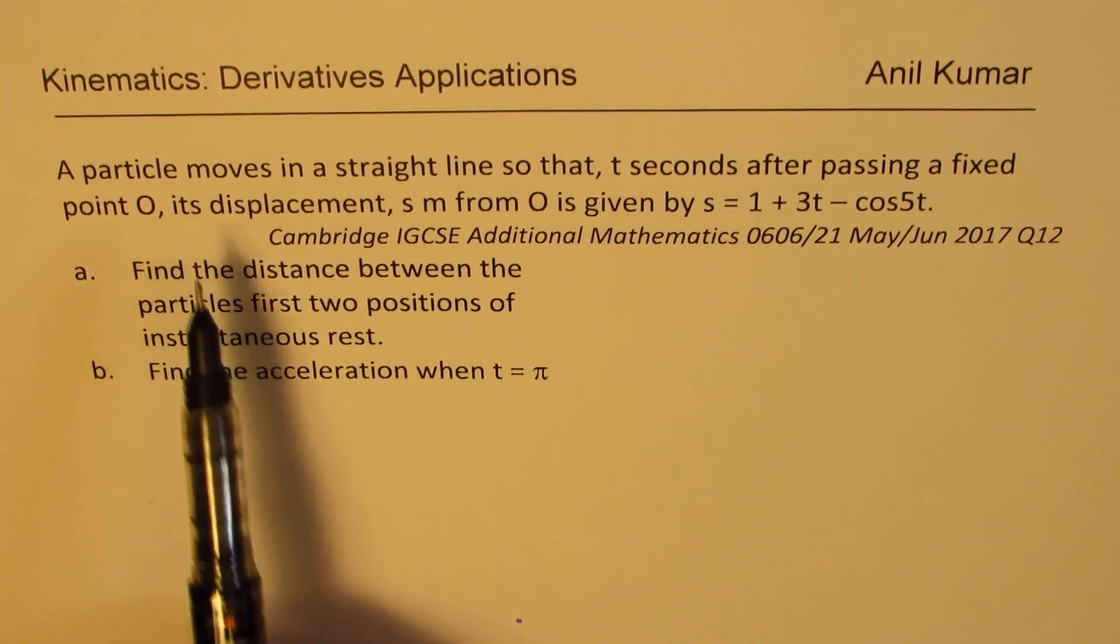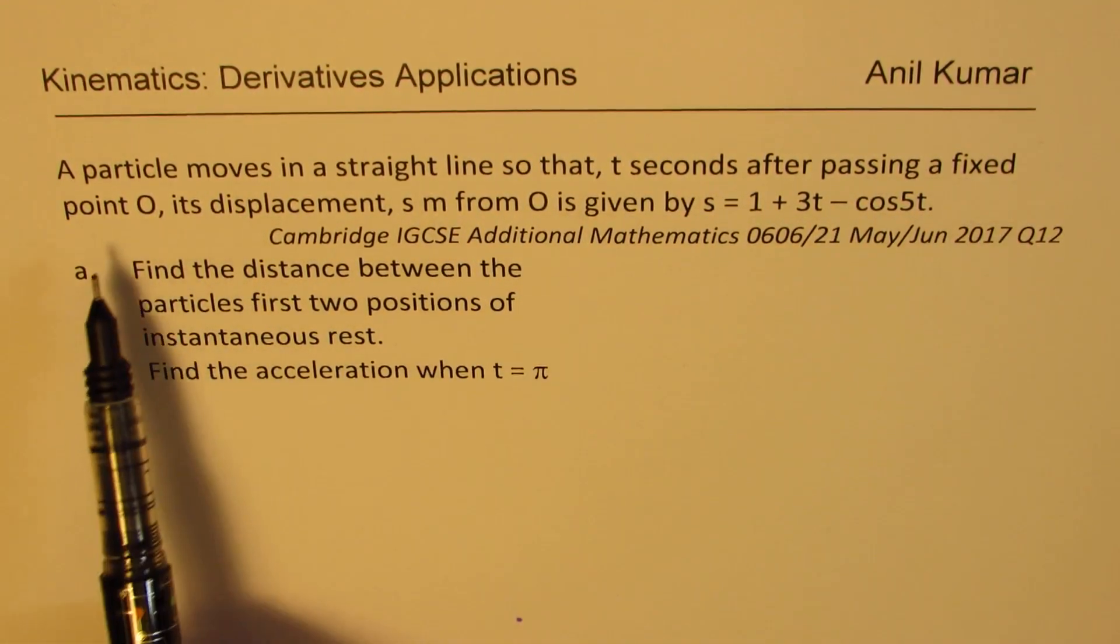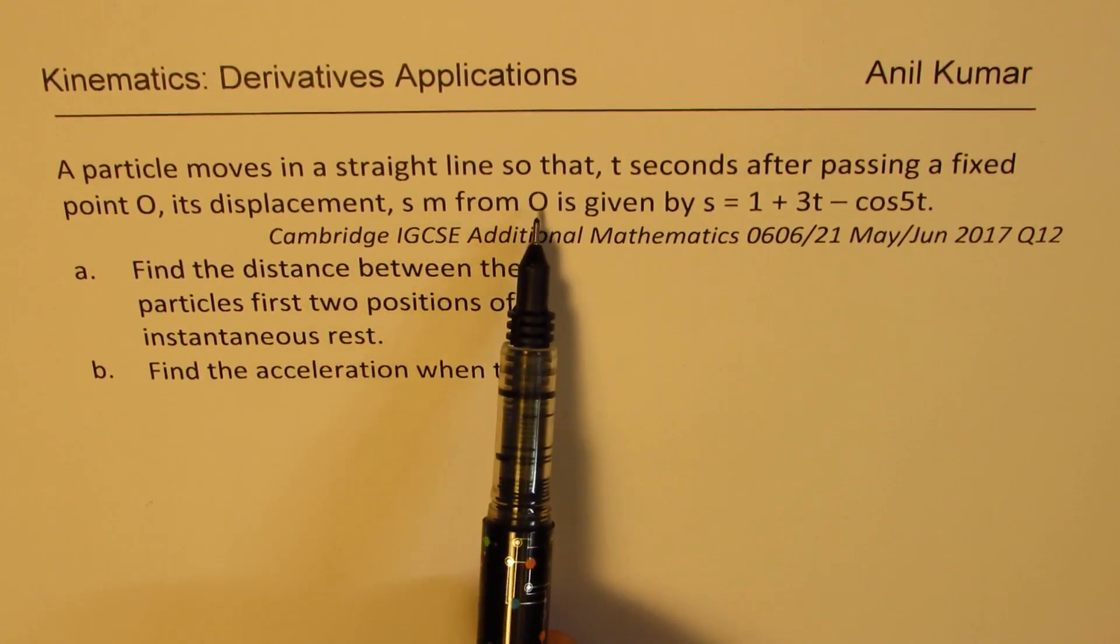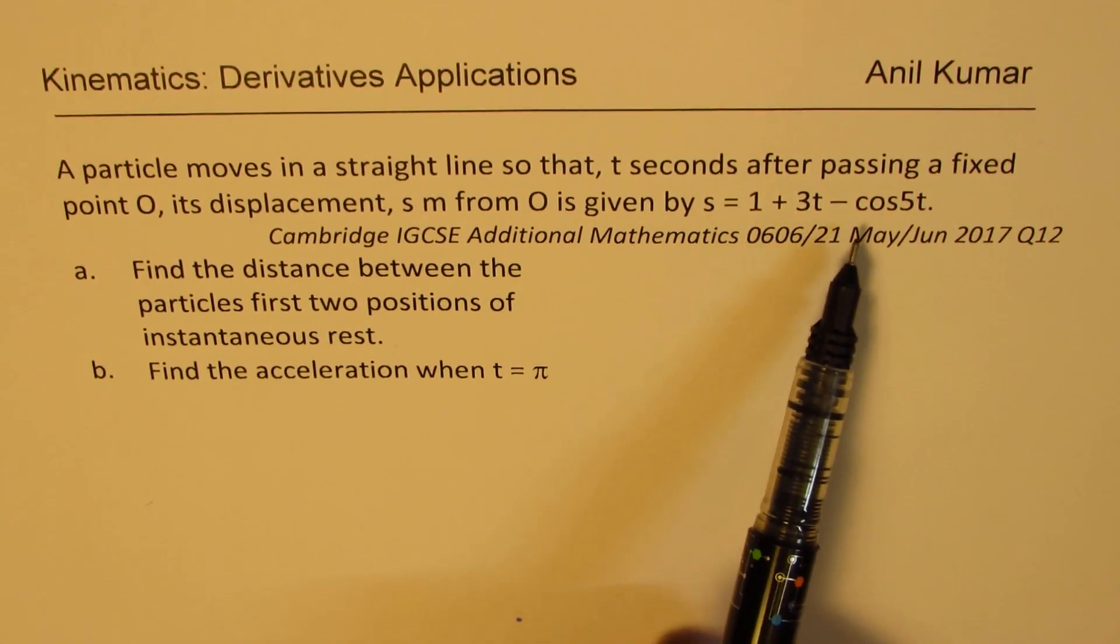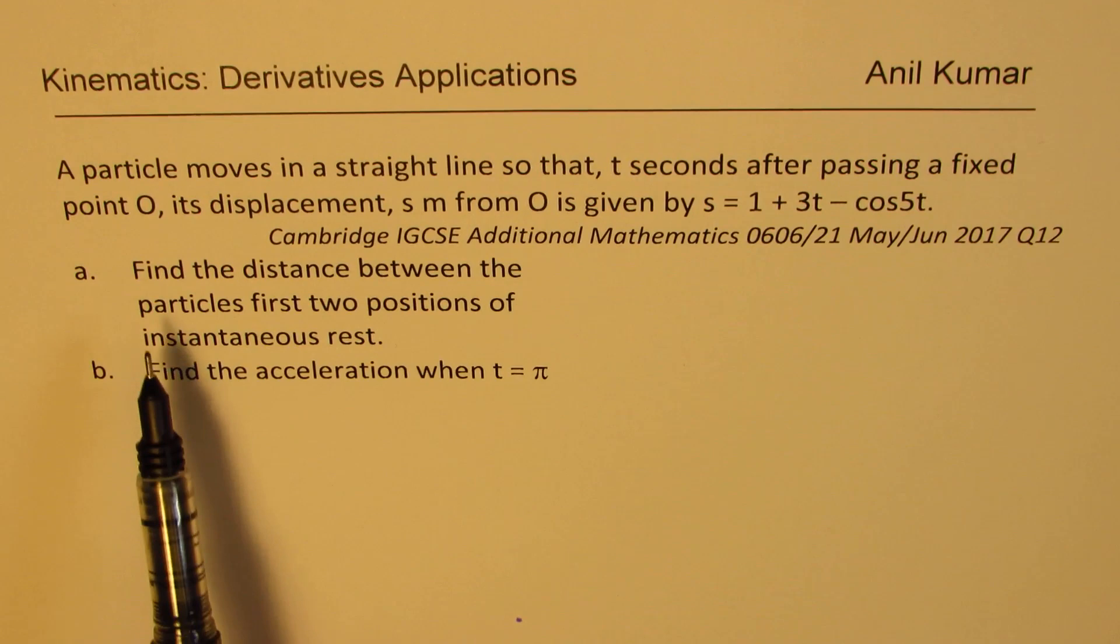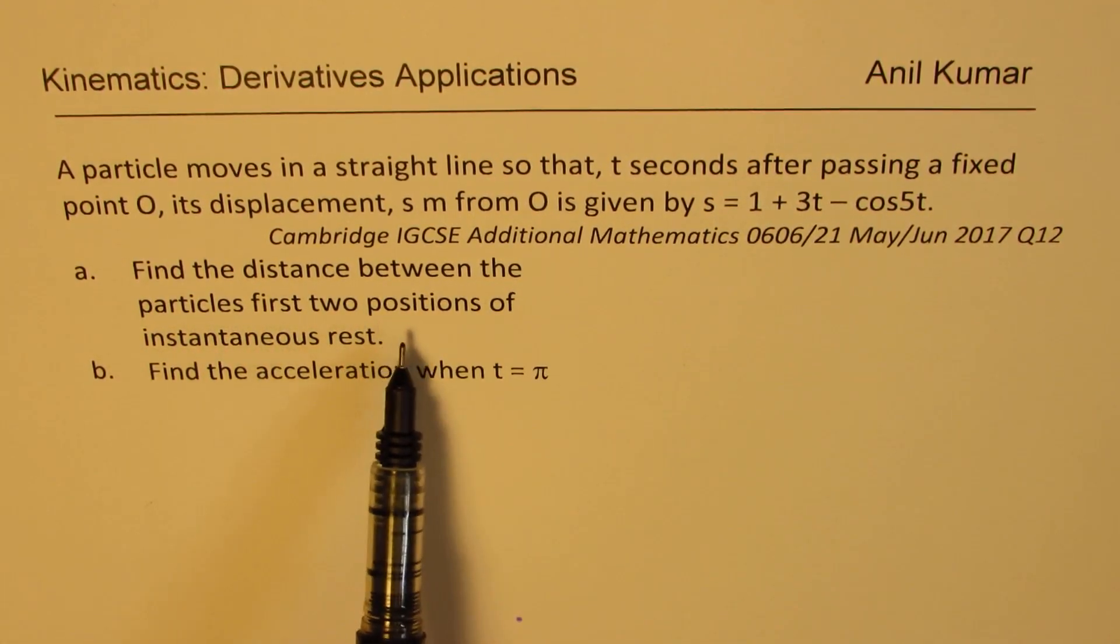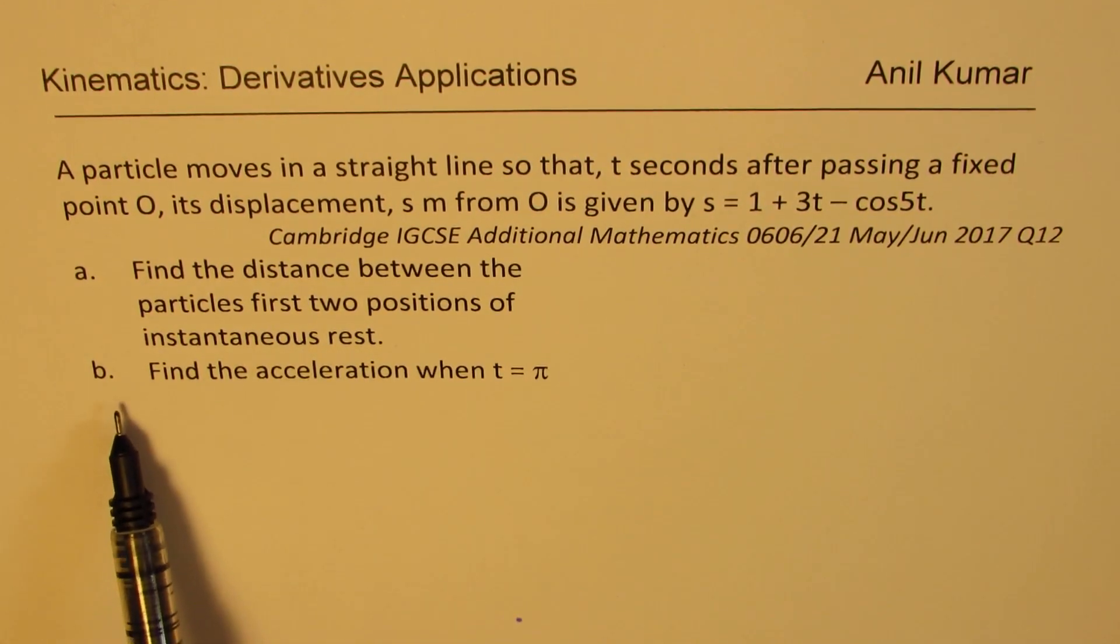A particle moves in a straight line so that t seconds after passing a fixed point O, its displacement s in meters from O is given by s equals 1 plus 3t minus cos 5t. Part a: Find the distance between the particle's first two positions of instantaneous rest. Part b: Find the acceleration when t equals π.